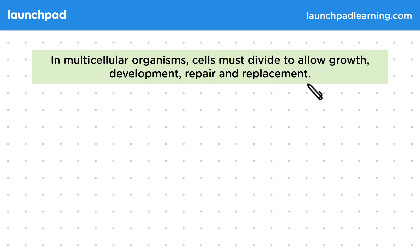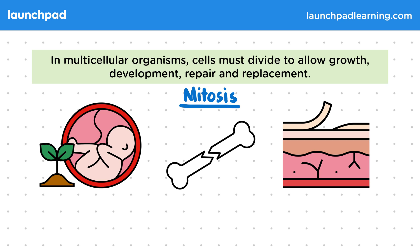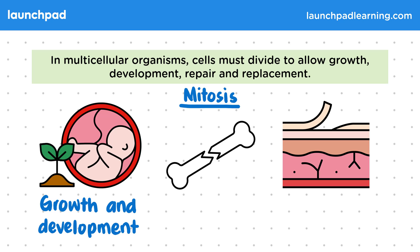Normal cell division occurs by a process called mitosis. Mitosis is used in the growth and development of plants and animals starting after fertilization. It's also used to repair damaged or broken tissues, and for the replacement of old cells. For example, skin cells are constantly shed and replaced.